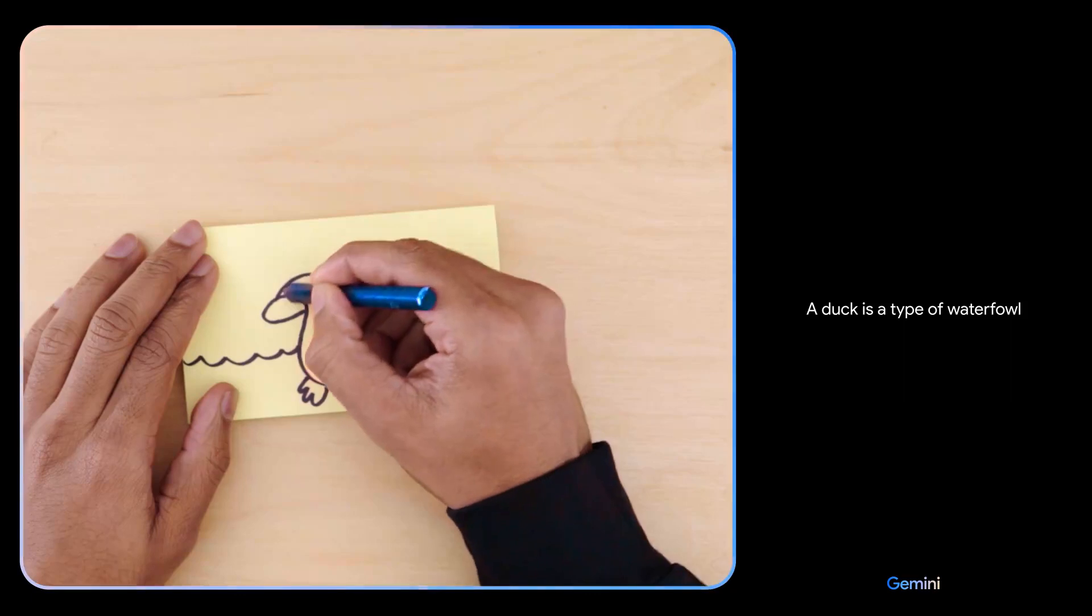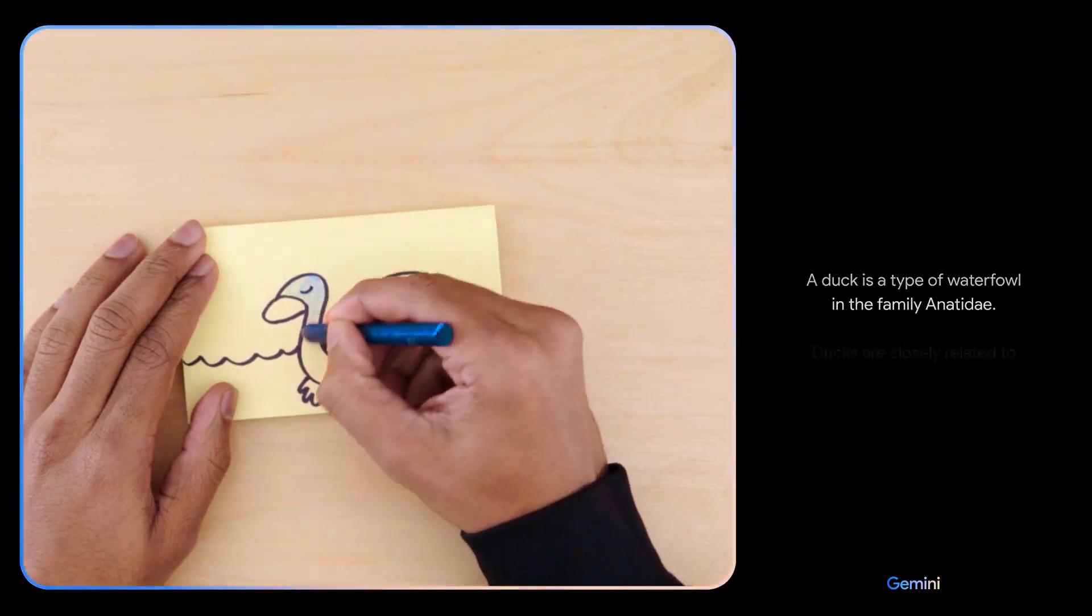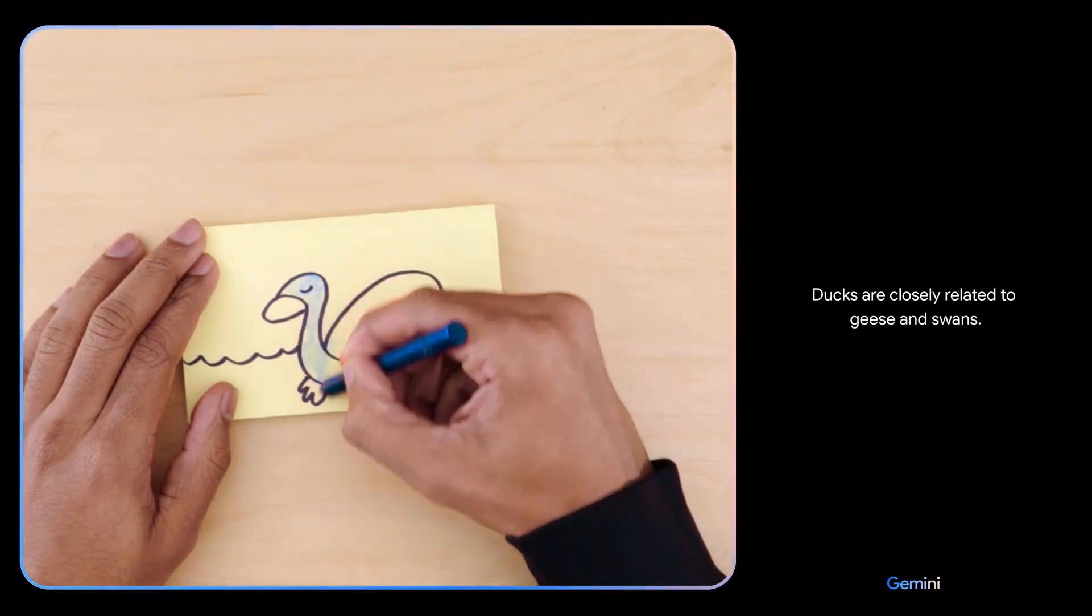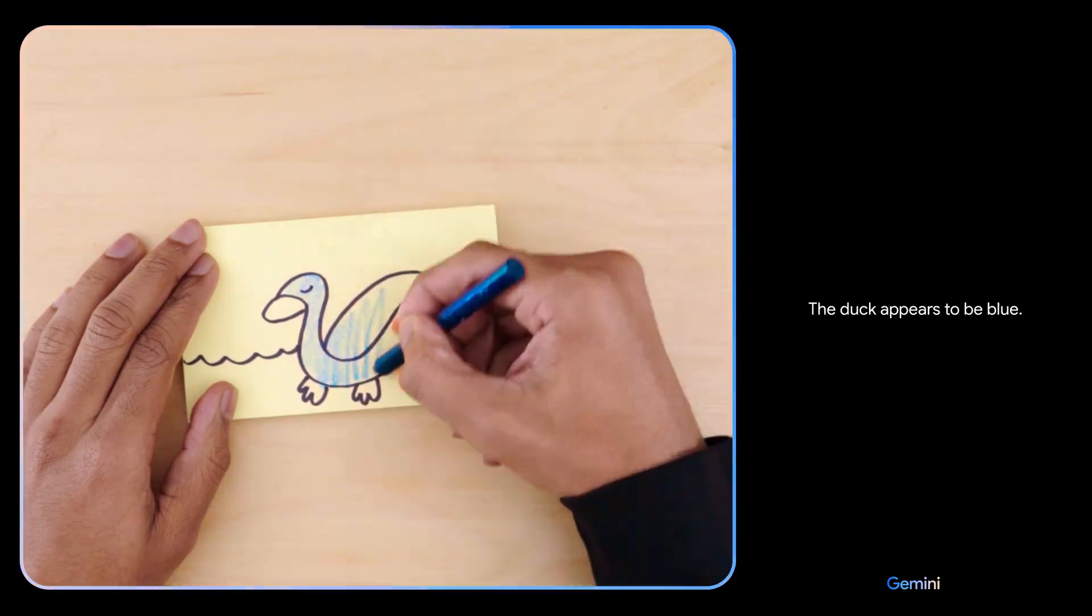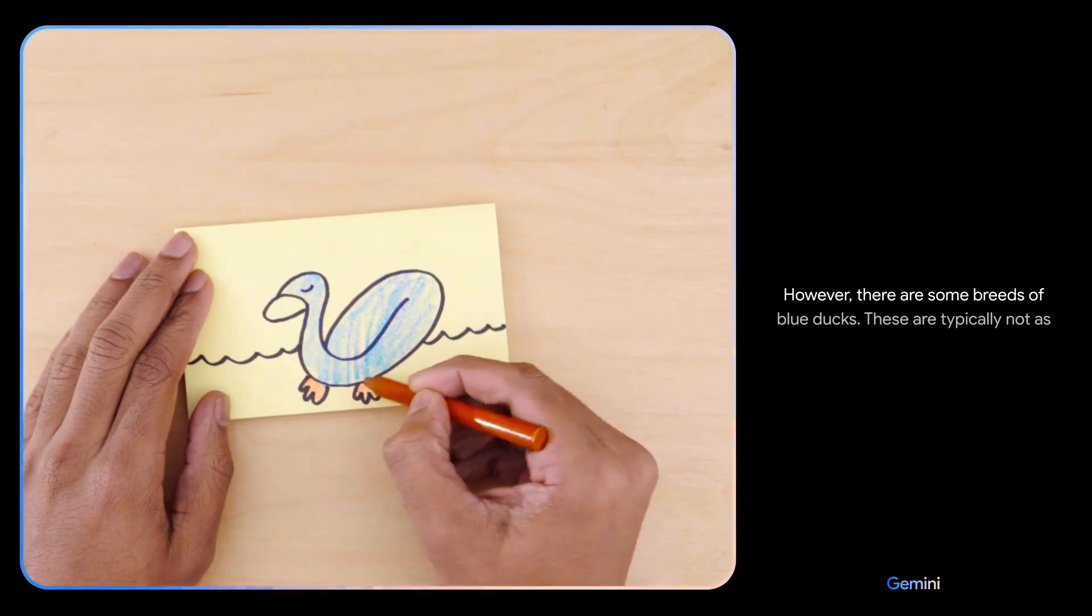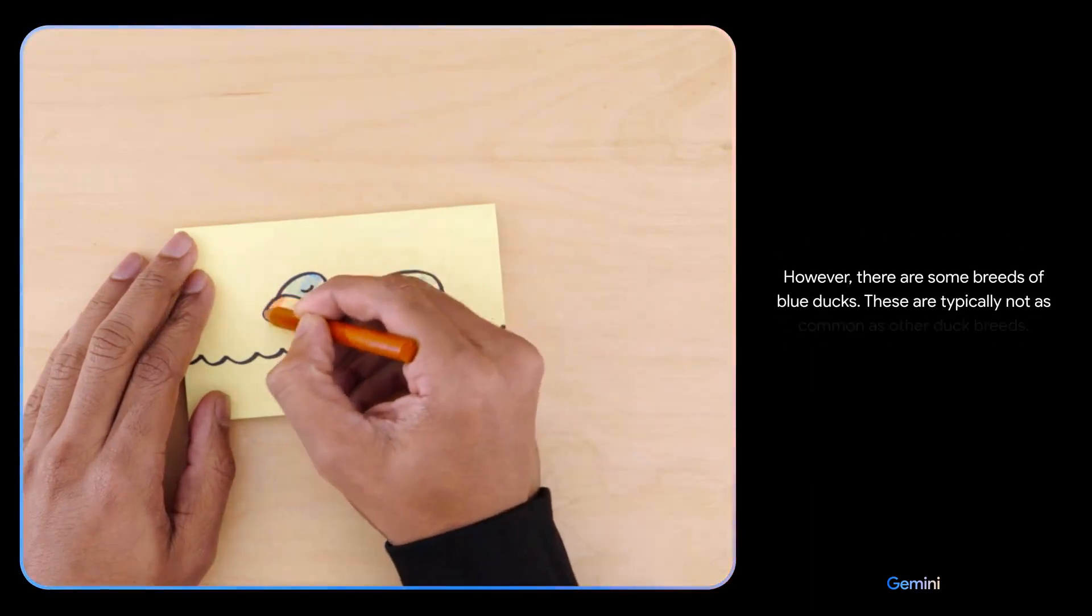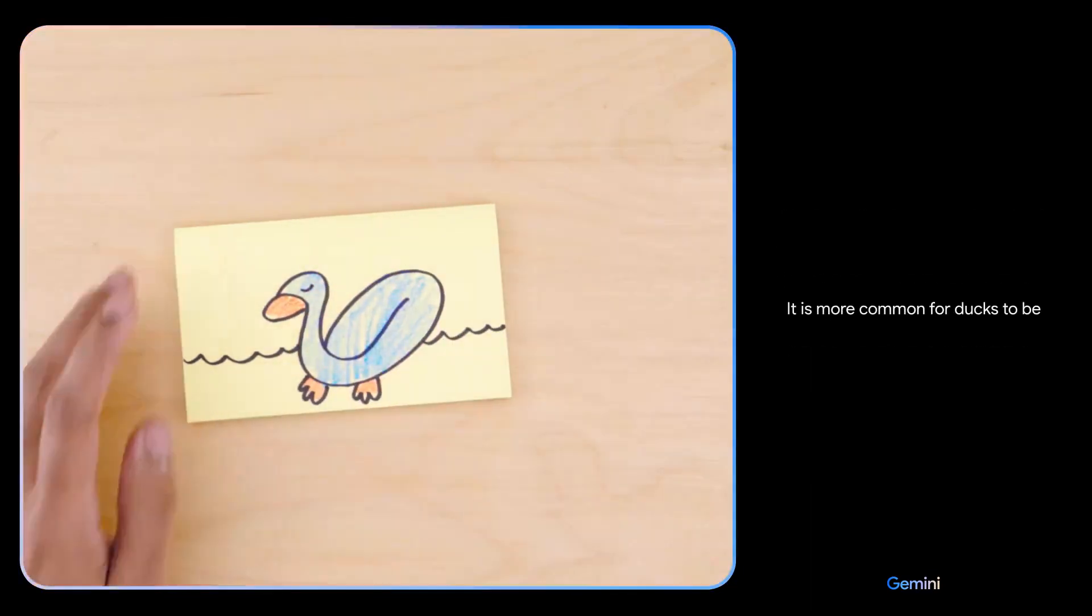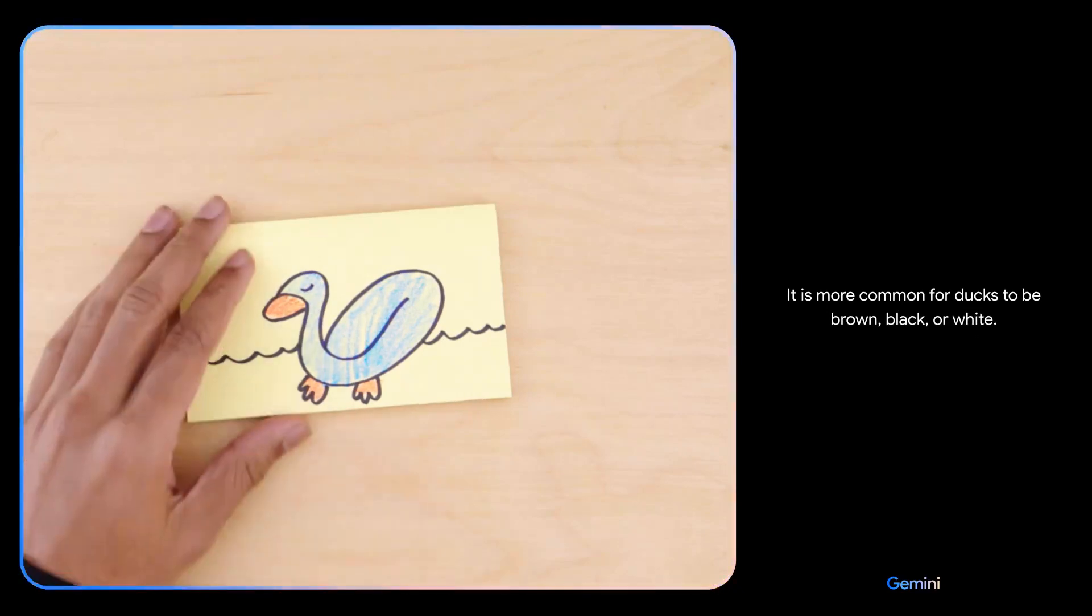A duck is a type of waterfowl in the family Anatidae. Ducks are closely related to geese and swans. The duck appears to be blue. This is not a common color for ducks. However, there are some breeds of blue ducks. These are typically not as common as other duck breeds. It is more common for ducks to be brown, black or white.